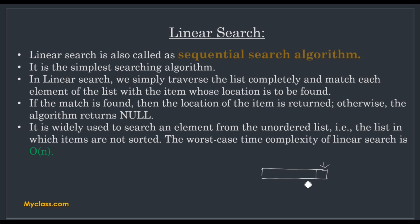In linear search we are searching from the first element to the last. If the first element matches, that is the best case. The worst case time complexity is O(n) - if the element is at the very last position or is not found in our list. If n is the number of elements in the array, we are searching up to n elements, so that is the worst case time complexity O(n), represented as big O of n or order of n.